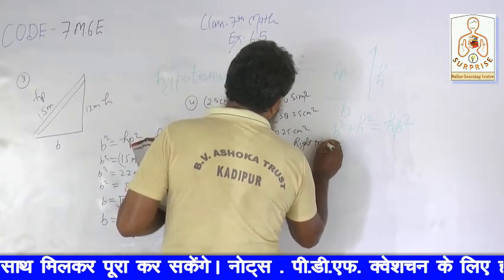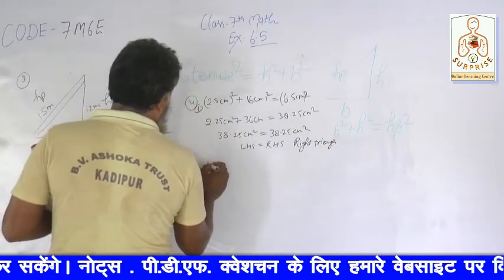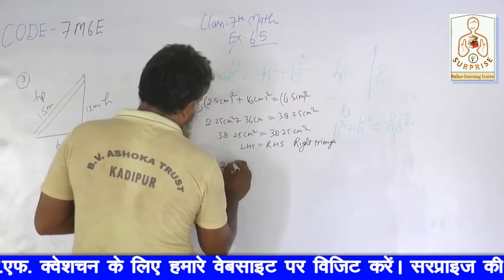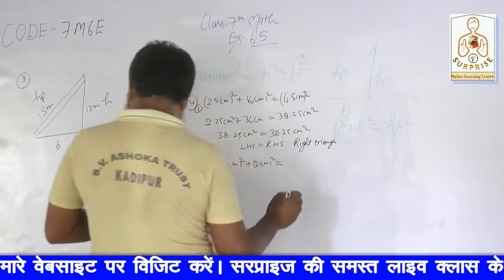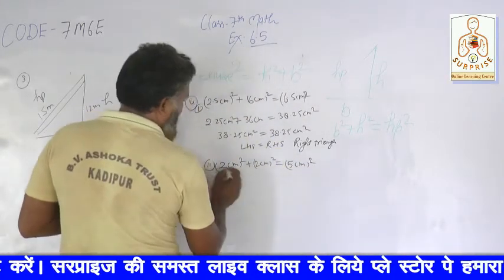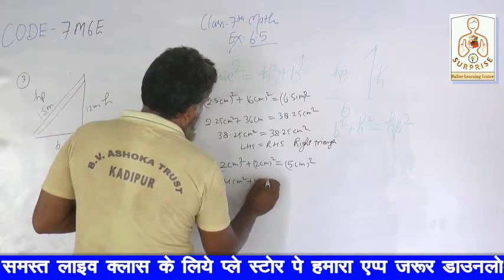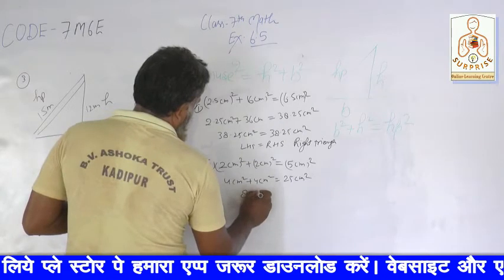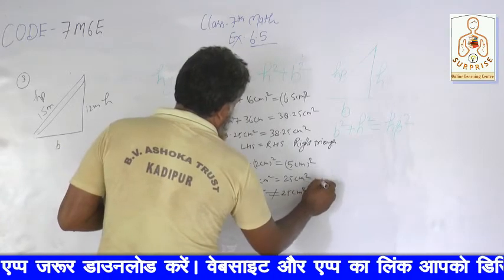The second one: 2 cm square plus 2 cm square is equal to 5 cm square? The two small sides squared: 4 cm square plus 4 cm square = 8 cm square. This is not equal to 25 cm square. So this is not a right triangle.